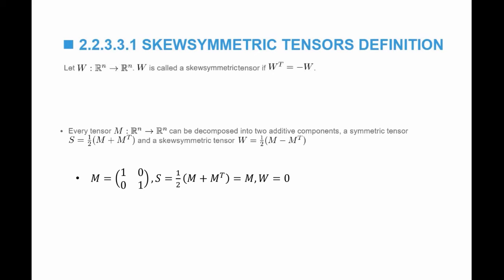So when the matrix itself is symmetric, I get that the symmetric component is itself, and W is equal to 0.